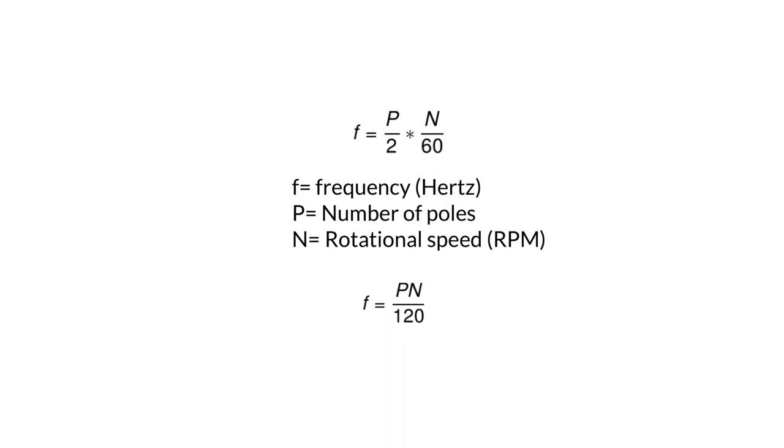Poles are directly proportional. Speed is directly proportional. And then we have this constant of 120 below. And that is how the rotational speed and the number of poles affect the frequency of an alternator.